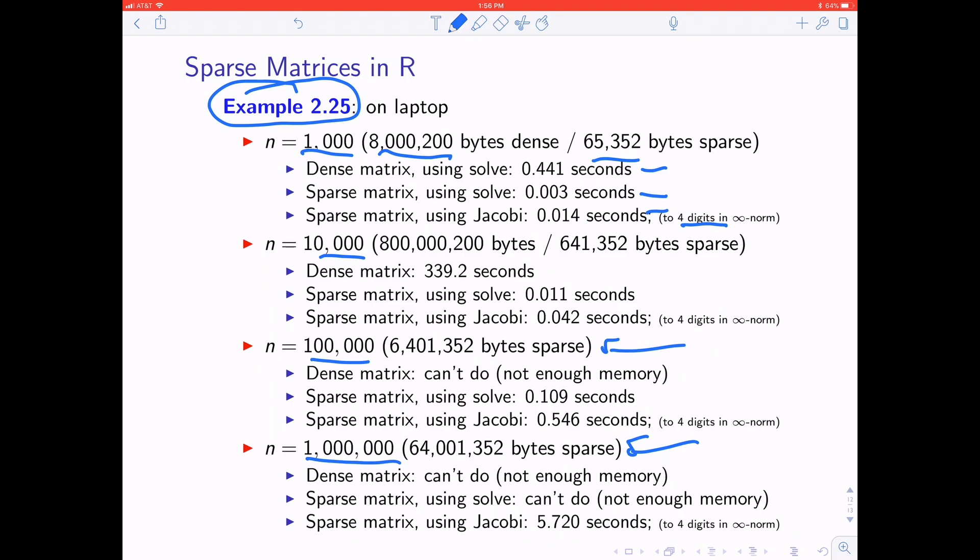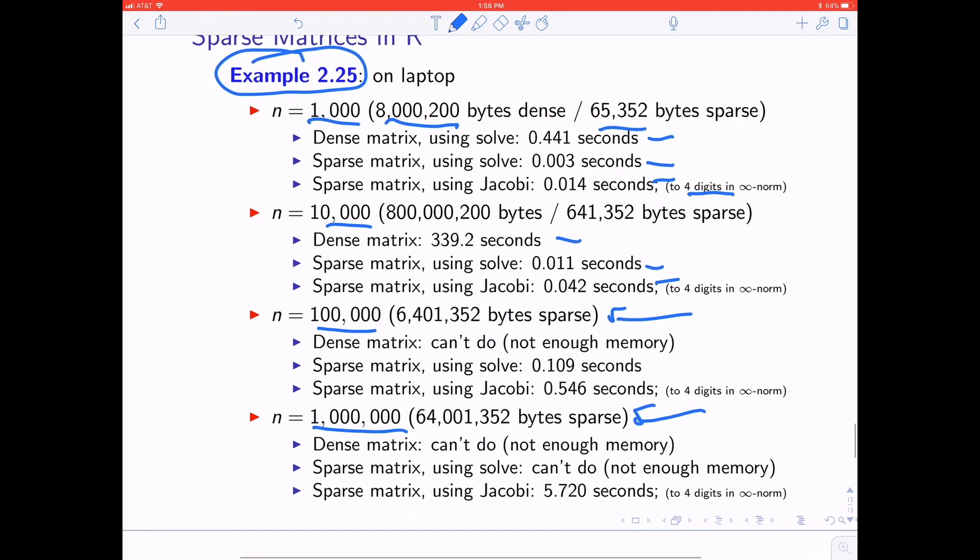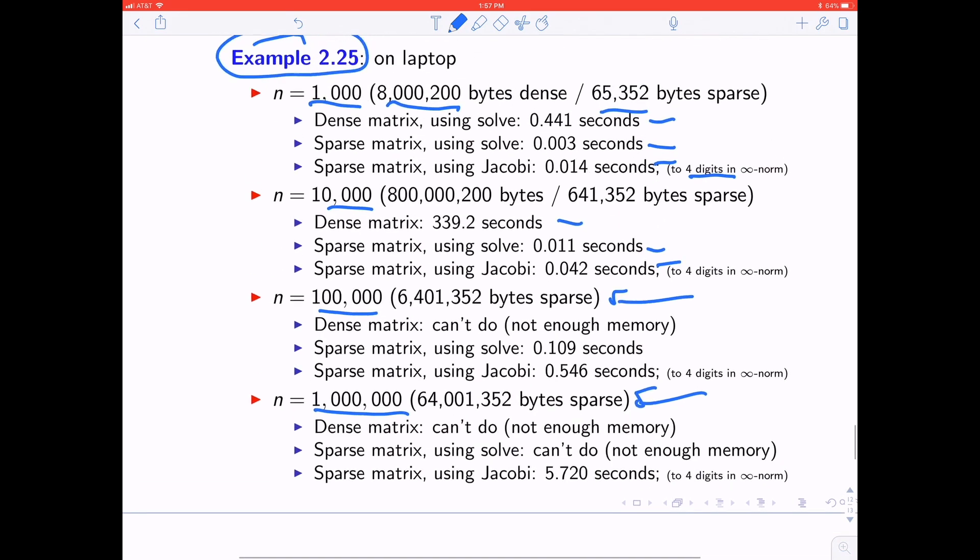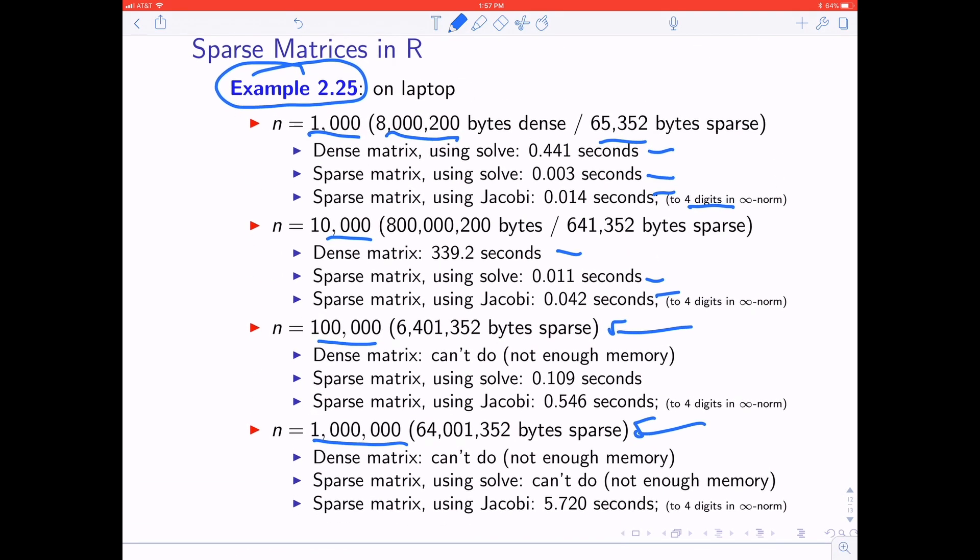But now, bump it up to n equals 100,000. You can't even do the dense matrix solve on the computer. There's not enough memory. If you do the sparse matrix solve, it's 0.1 seconds, and sparse matrix Jacobi iteration is about half a second. So still slower.